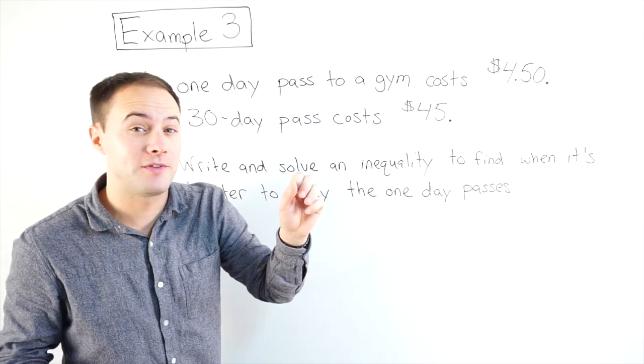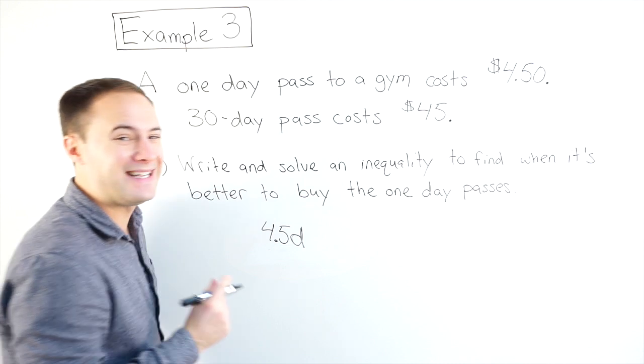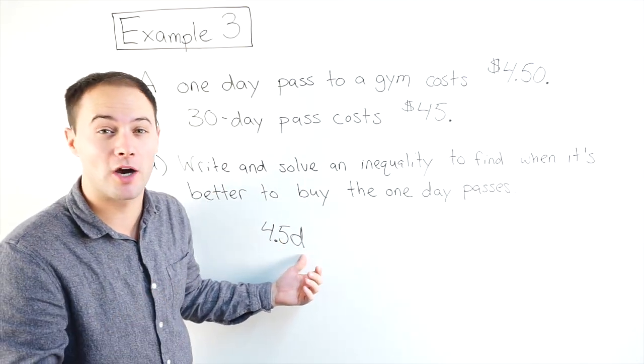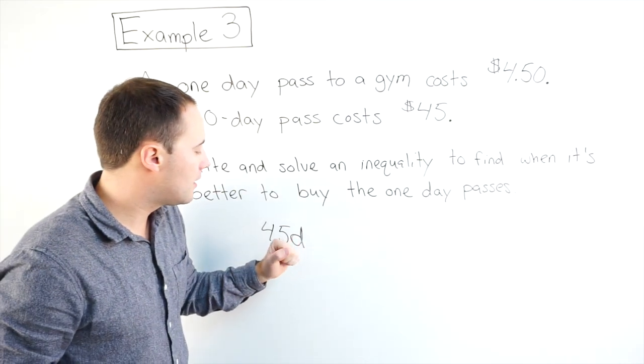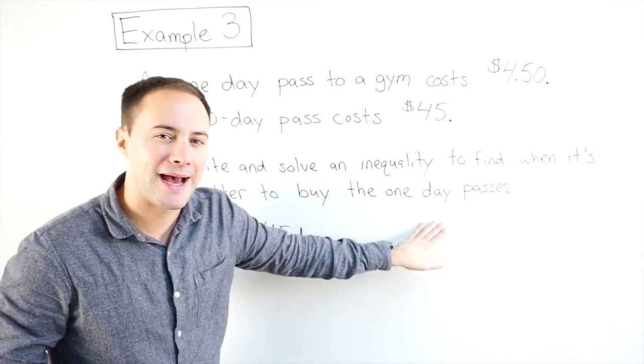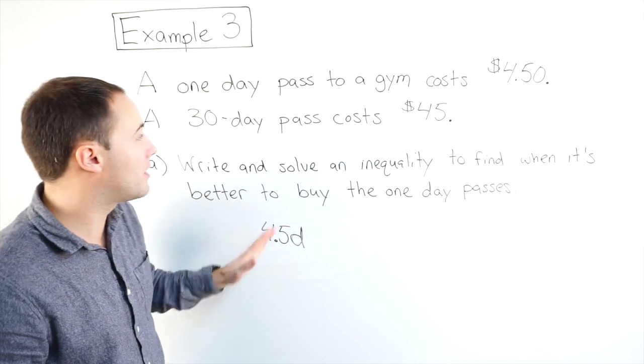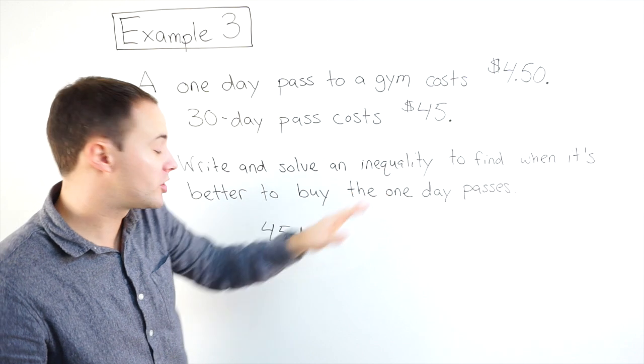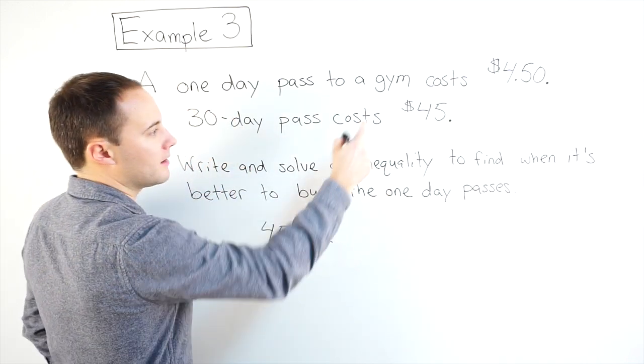Well, each day costs $4.50, so this will become 4.5D, right? 4.5, $4.50, times the number of days you go. Now, what we're looking for is when it's going to be cheaper. When it's better to do the one day passes. And it would be better when this cost is cheaper than the $45, than the month long. So to show that this is cheaper or a better deal, we would make it less than $45.